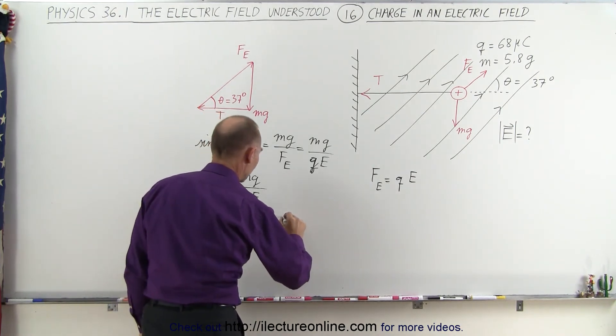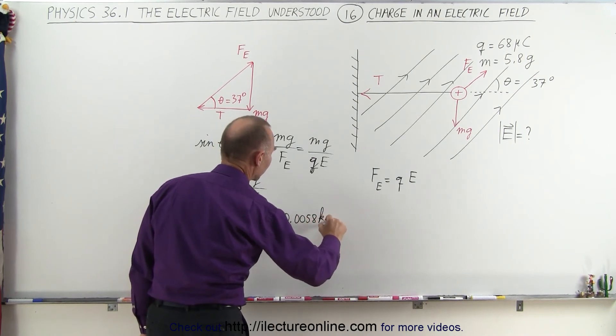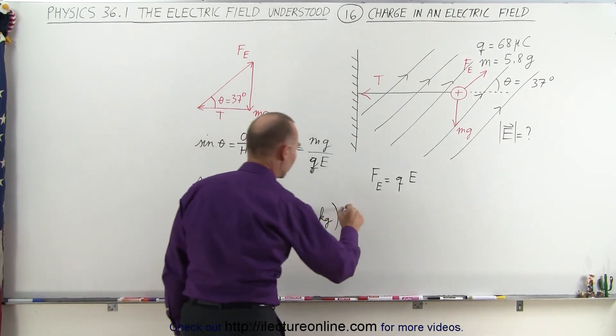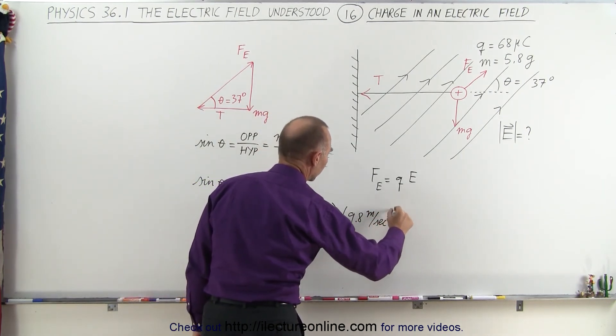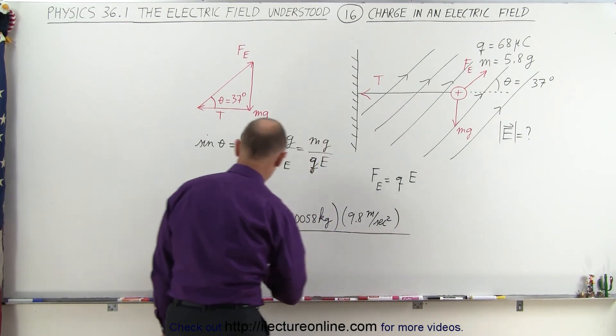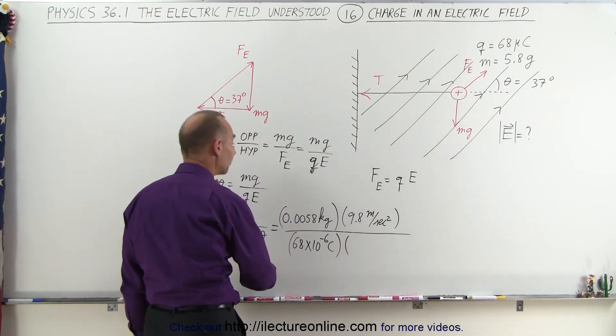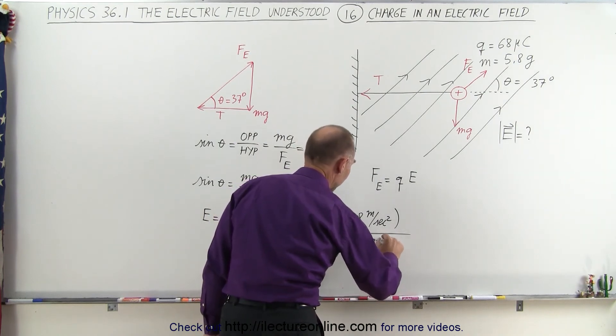So this is equal to the mass, which is 0.0058 kg, multiplied by G, which is 9.8 m per second squared, divided by Q, which is 68 times 10 to the minus 6 Coulombs, times the sine of theta, which would be the sine of 37 degrees.